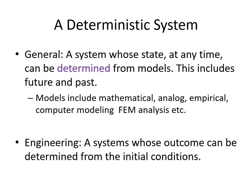So what is a deterministic system? In general, a deterministic system is a system whose state at any time can be determined — you see the word there — from models. This includes determining the state of a system sometime in the past or in the future. A model can be anything such as a mathematical model, an analog model, an empirical model, a computer model, a finite element model, analysis, etc.